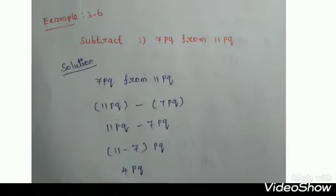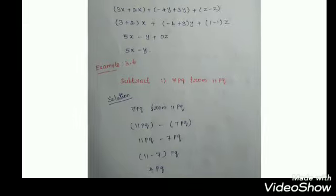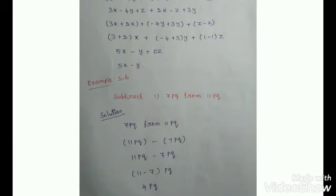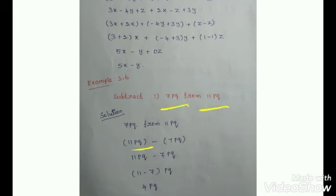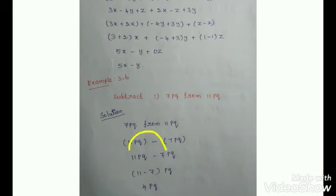Example 3.6: Subtract 7PQ from 11PQ. The word 'from' means last number first, first number last. So: 11PQ minus 7PQ. Both variables are PQ, so 11 minus 7 equals 4. Answer: 4PQ.